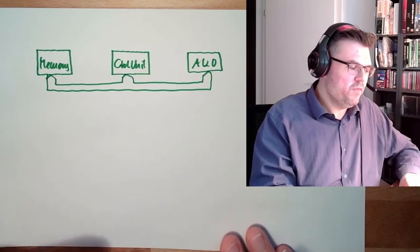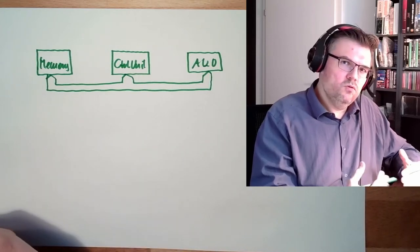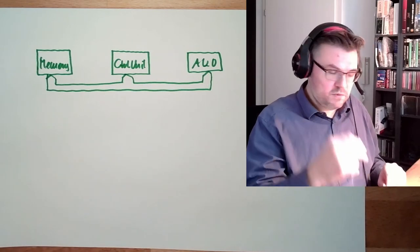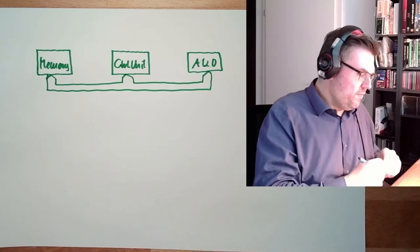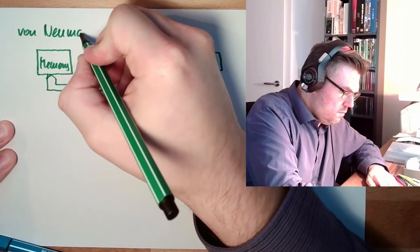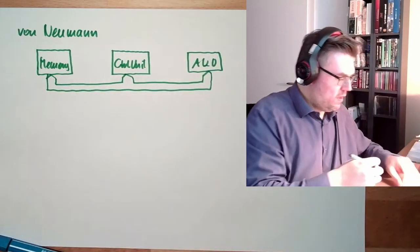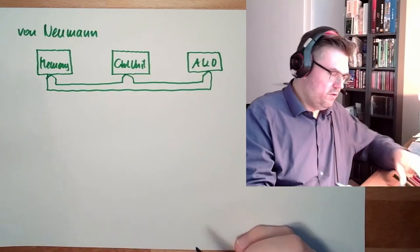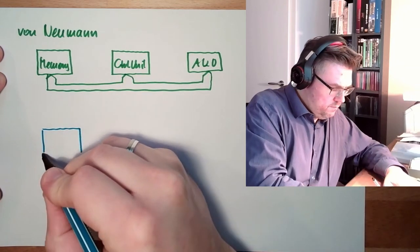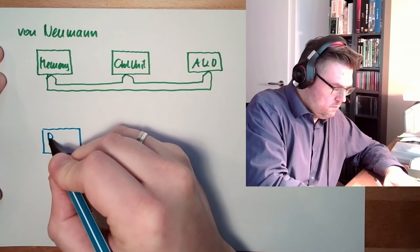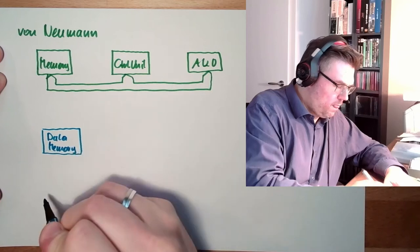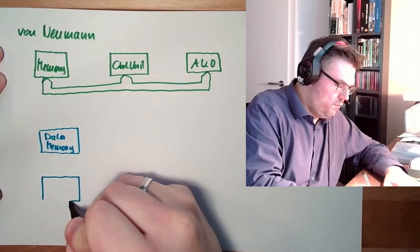The Harvard architecture tries to overcome this. The Harvard architecture has two types of memory. So this is the Von Neumann, and the Harvard architecture has two types of memories: there is the data memory and there's the program memory with the instructions.